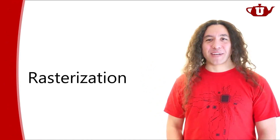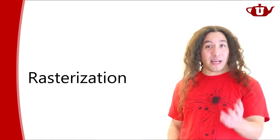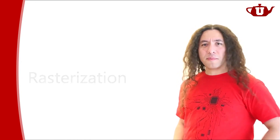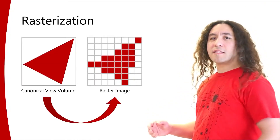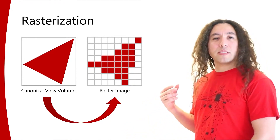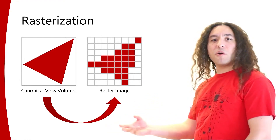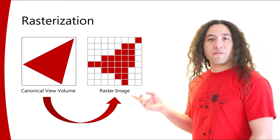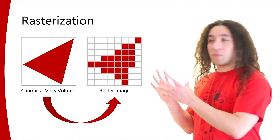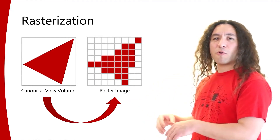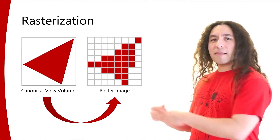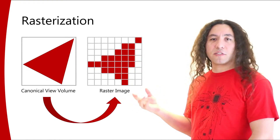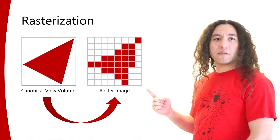So what is rasterization? We've actually implemented rasterization — it was done for us by the GPU. In broad strokes, rasterization takes a vector definition of our scene in the canonical view volume and converts it to a raster image. We take triangles in object space, transform them all the way into view space and then the canonical view volume, and after that, rasterization takes over and rasterizes those primitives into a raster image.